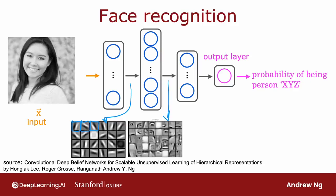If you look at the next hidden layer, you find that these neurons might learn to group together lots of little short lines and short edge segments in order to look for parts of faces. Each of these little square boxes is a visualization of what that neuron is trying to detect. So this first neuron looks like it's trying to detect the presence or absence of an eye in a certain position of the image, and the second neuron looks like it's trying to detect the corner of a nose, and maybe this neuron is trying to detect the bottom of a nose.